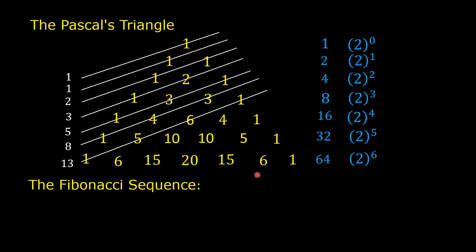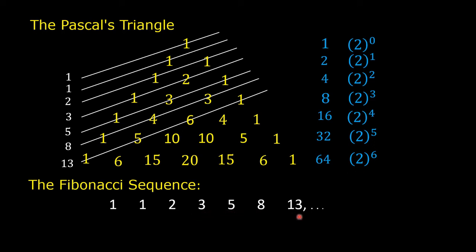Notice that these diagonal sums give the first 7 terms of the Fibonacci sequence: 1, 1, 2, 3, 5, 8, and 13. The Fibonacci sequence is hidden within Pascal's Triangle.